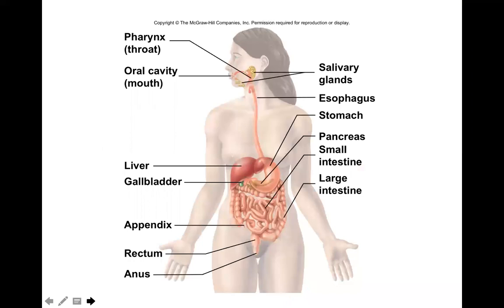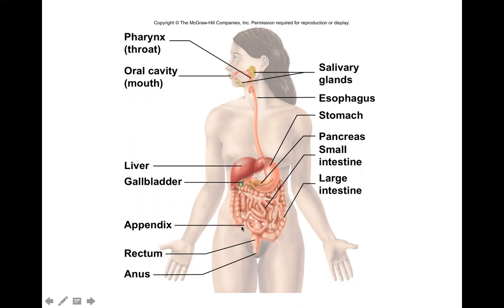Starting with the oral cavity — once food is taken in, it goes to the pharynx. Salivary glands produce digestive enzymes that break down macromolecules such as carbohydrates, fats, and proteins. It goes to the esophagus, enters the stomach for storage, and after four to six hours empties into the first part of the small intestine, the duodenum. It then goes to the cecum, the first part of the large intestine, ascending colon, transverse colon, descending colon, sigmoid, rectum, and finally elimination of waste products at the anus.